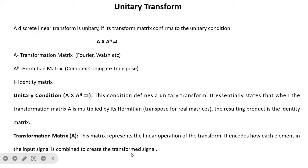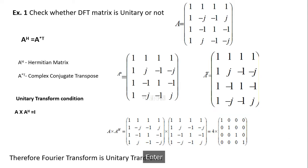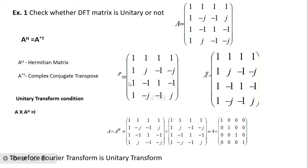When we multiply our input signal — the image — with the transformation matrix, we are extracting particular components from it. Example: check whether the DFT matrix is unitary. For a 4×4 DFT matrix, we first calculate its Hermitian by taking the complex conjugate, where minus j becomes j and j becomes minus j, while real values remain unchanged. We then take the transpose of this matrix. Multiplying gives a matrix that is not normalized.